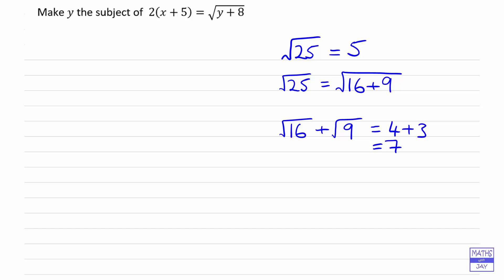So what I've shown here is that the square root of 16 plus 9 is not equal to the square root of 16 plus the square root of 9, because of course we know that 5 is not equal to 7.